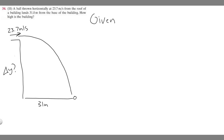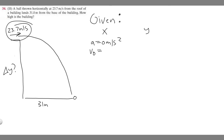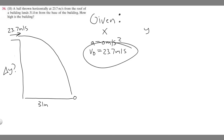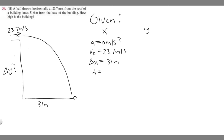When solving these problems, we write down our given values separated into the x and y directions. In the x direction: acceleration is zero meters per second squared, initial velocity v-sub-zero is 23.7 meters per second, and delta x is 31 meters — the change from where the ball starts to where it lands. We don't know time, so time equals question mark.